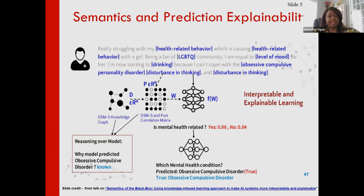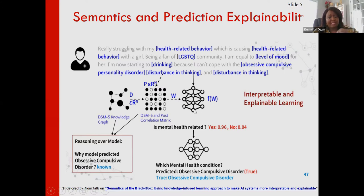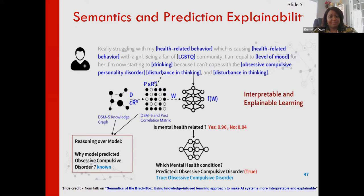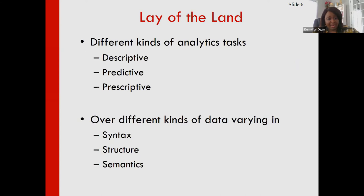These researchers are looking at how to use semantics for AI explainability — how do we get deep learning models to explain how they arrived at a prediction? What they did was integrate a conceptual model, the DSM-5 graph, which is a knowledge base about mental health concepts and how they are related. By integrating that into the modeling process, the prediction became obsessive compulsive disorder, and furthermore they were able to produce a reasoning justification for why.